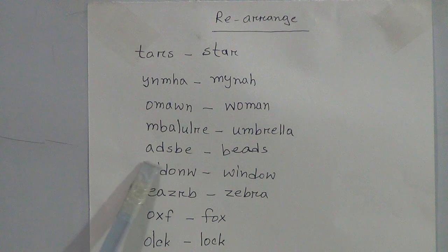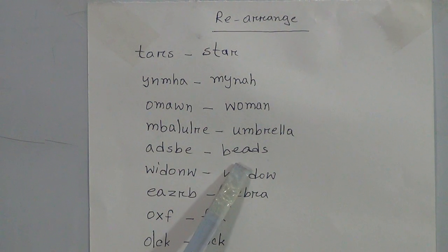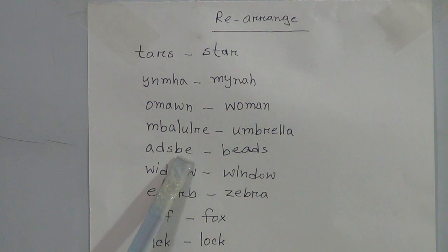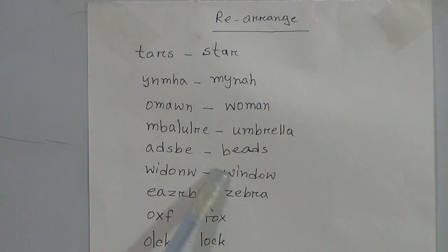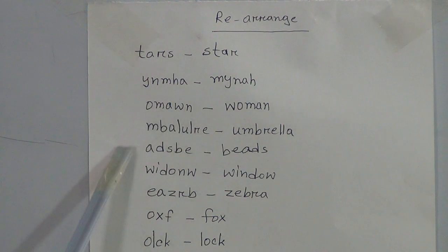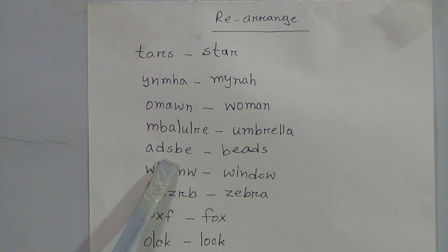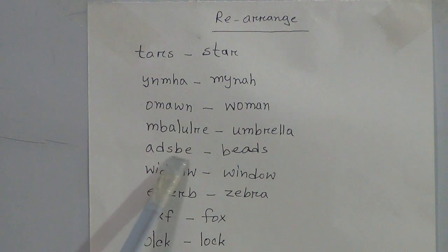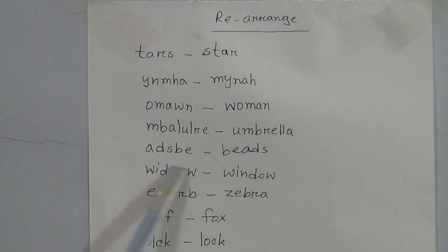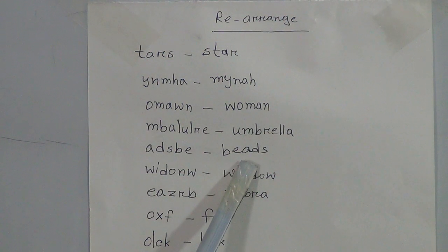Then the next letters: A, D, S, B, E. If we arrange these letters, we will get a meaningful word: beads. Here, the letter B is before the last letter. Then E is the last letter — B-E-A — then D, and the last letter is S, found in the middle. So the letters arrange to B-E-A-D-S, beads.